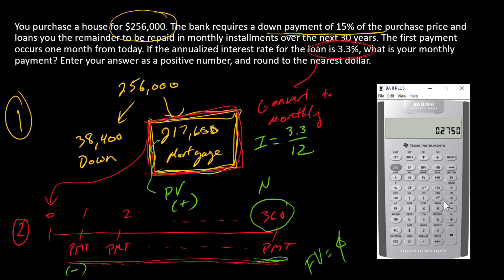Zero is going to go into FV, and now I'm almost done. So compute payment: $952.99.